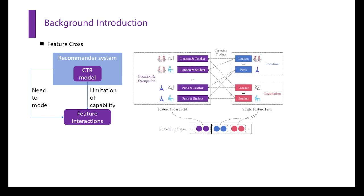A mainstream way to solve this problem is to construct feature crosses explicitly via Cartesian products. For example, the two single features, Location and Occupation, can derive a Location and Occupation feature cross, which a model can directly take as input.